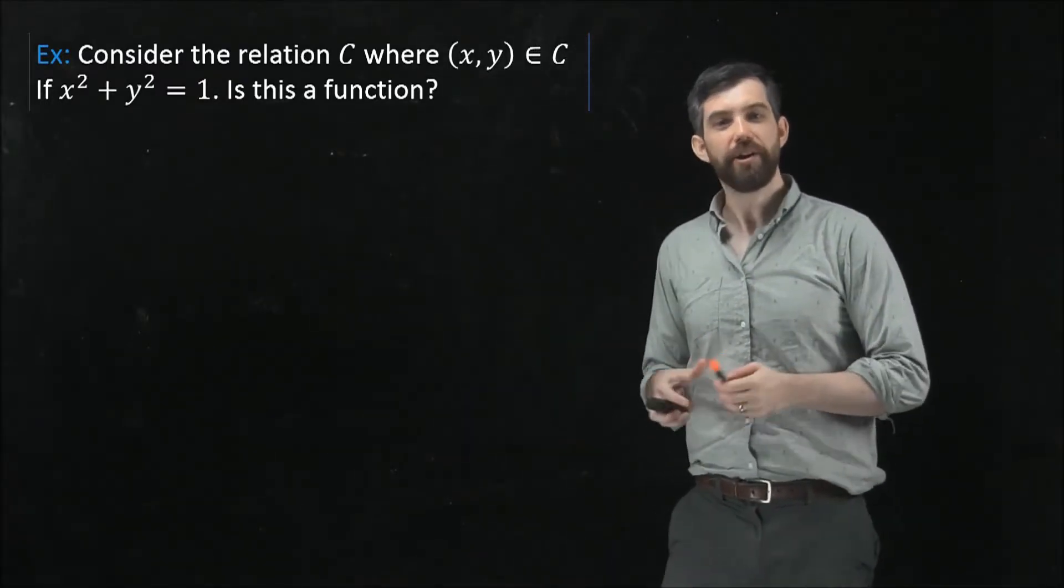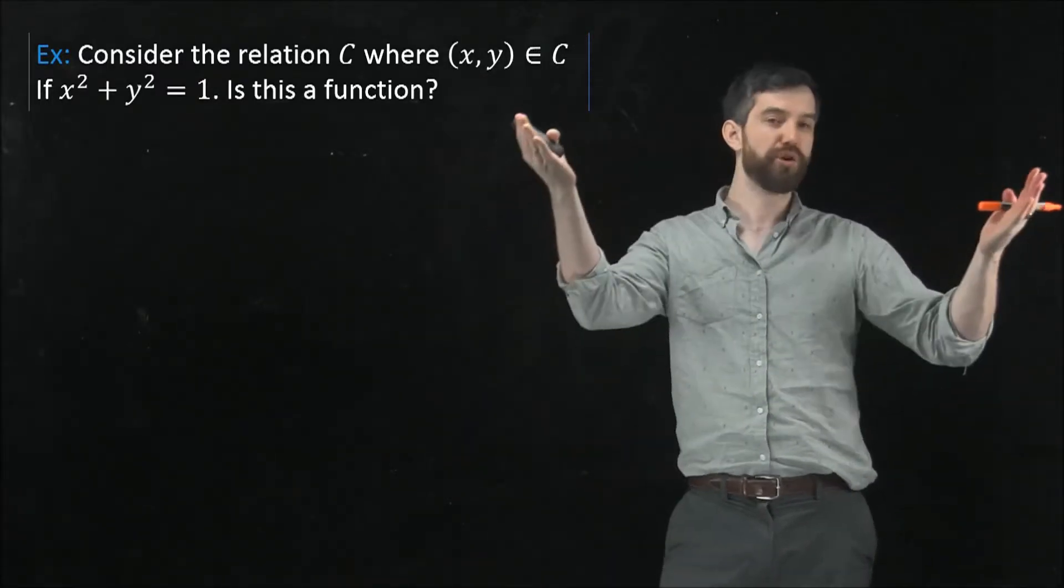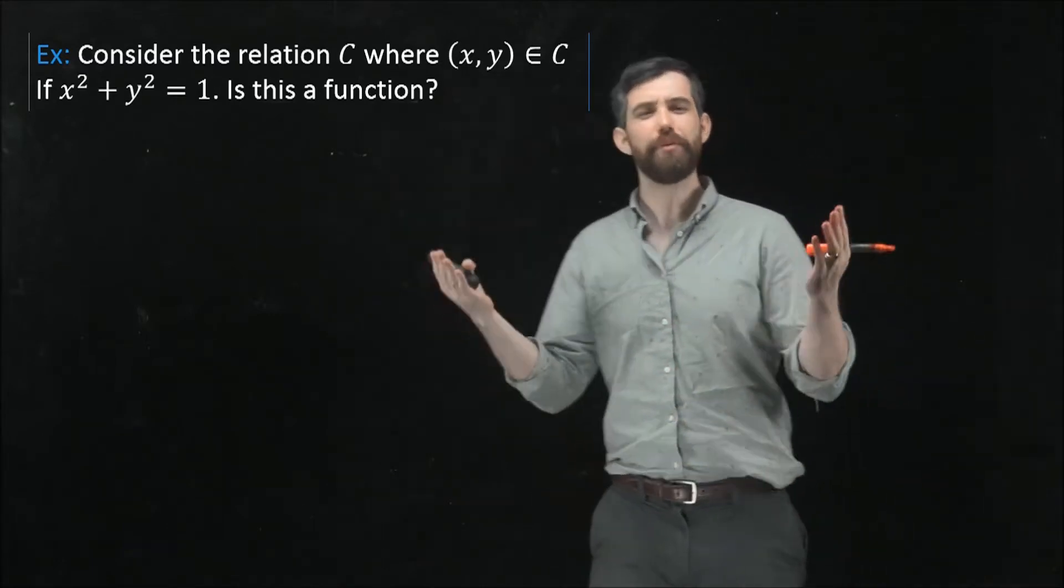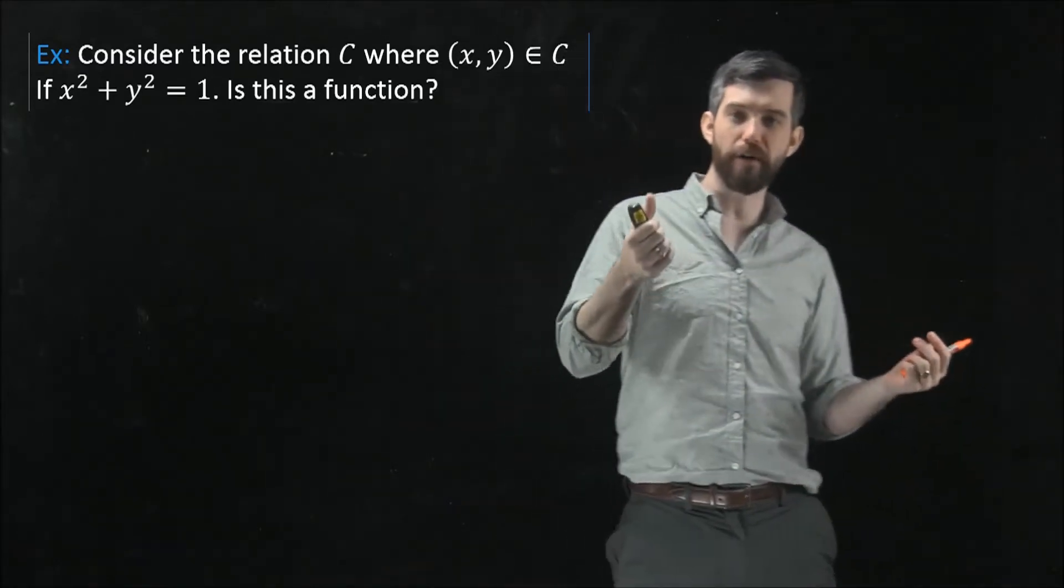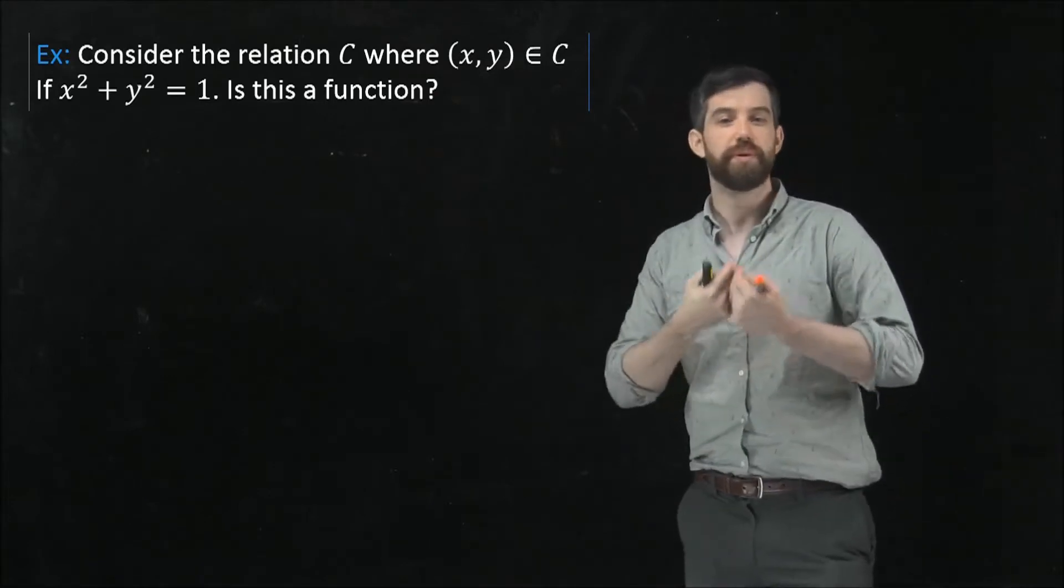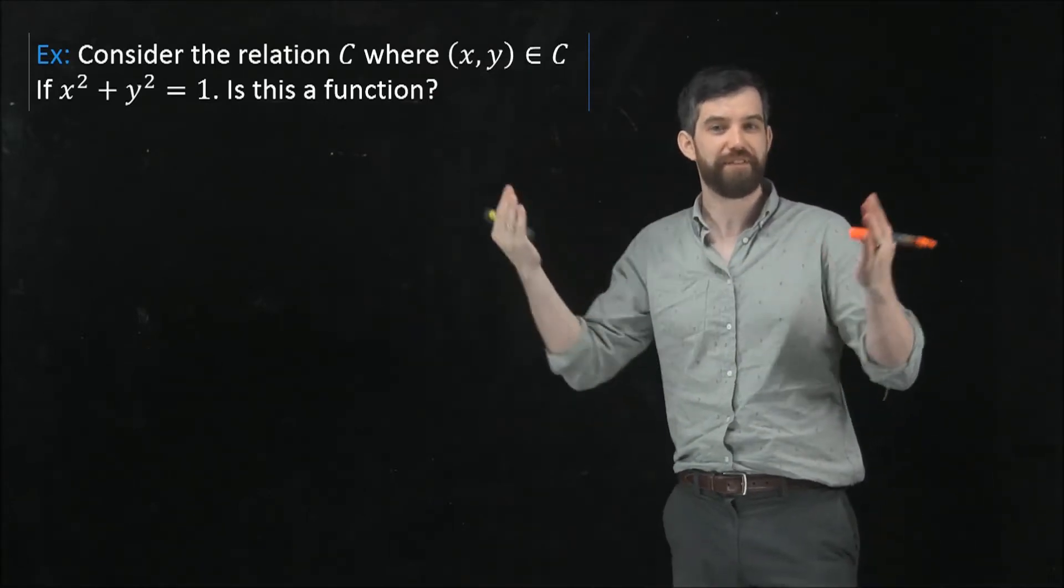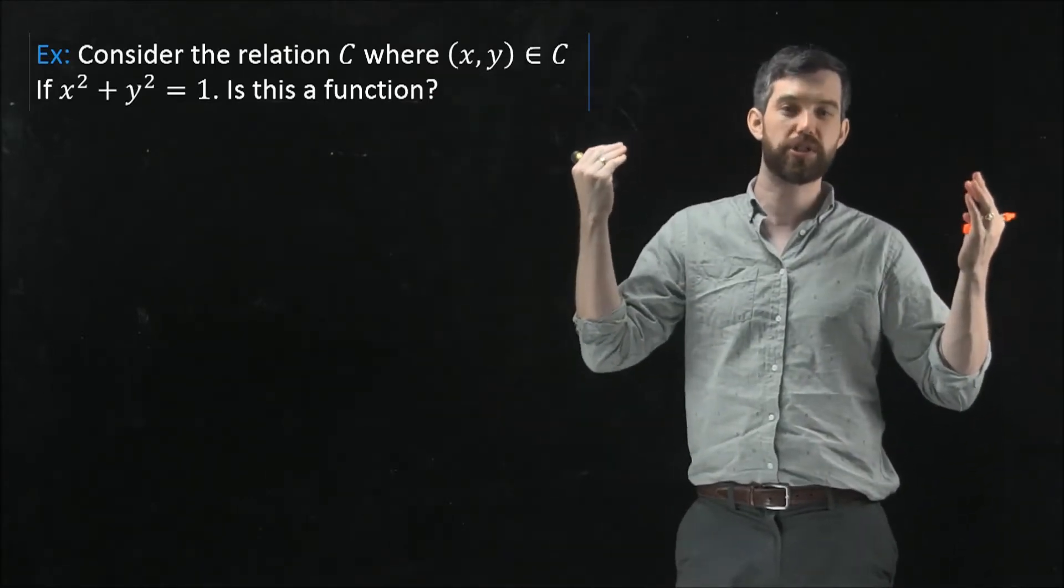Let's see an example. Here I have a particular relation and normally we've used the symbol R for a relation, but in this case I'm going to use the symbol C because it is going to be a very famous relation. It's going to be the circle relation.